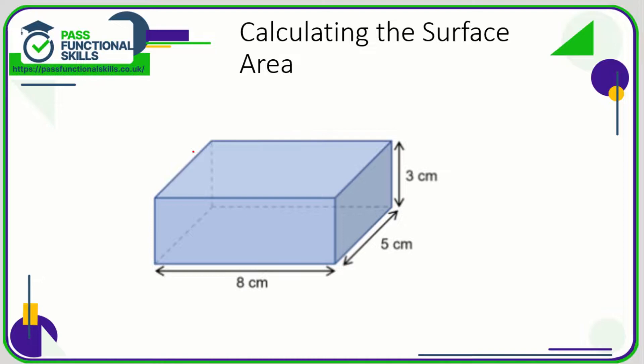Let's take a look at calculating surface areas. Here we have a cuboid. A cuboid is made up of six rectangles, so we have two identical rectangles which make up the top and the base.